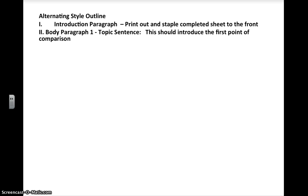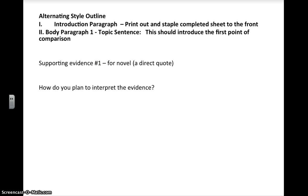Body paragraph one will always start with a topic sentence. Remember that topic sentence is going to introduce the first point of comparison and the first dystopian idea. It's basically going to tell us what you're going to prove in just this paragraph. Then of course you'll have supporting evidence from the text — a direct quote. How you plan to interpret the evidence, explain it to us — C-E-I. You've made the claim with your topic sentence, then evidence, and now interpretation.